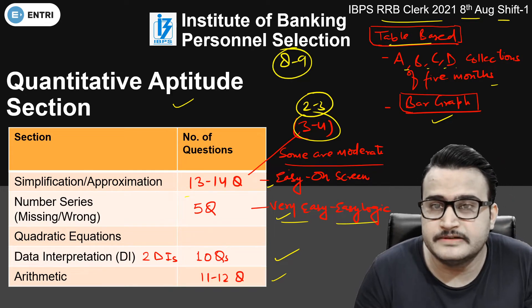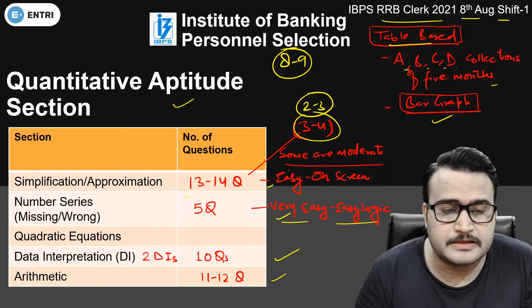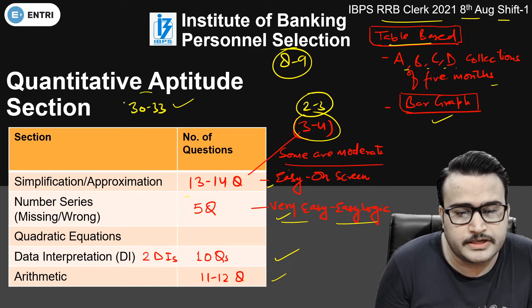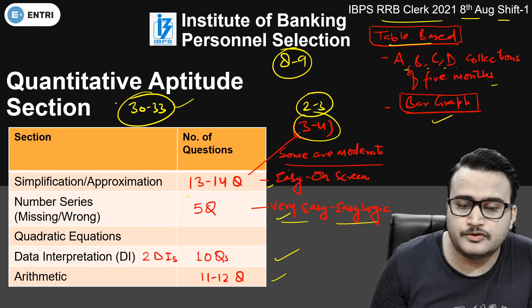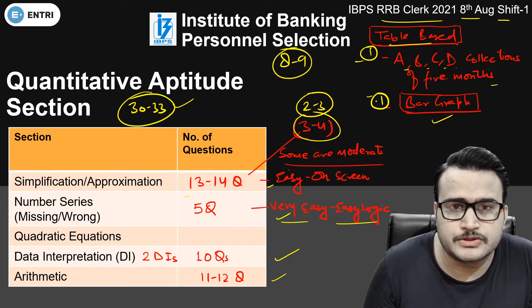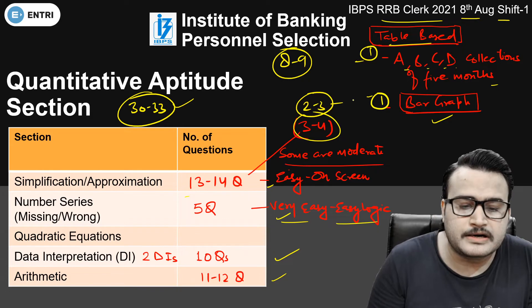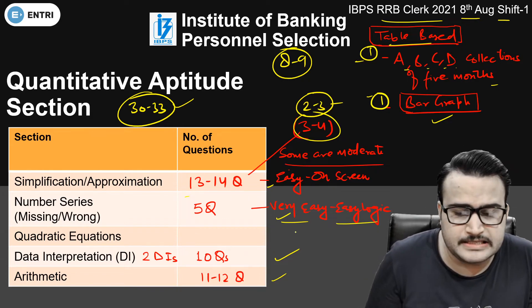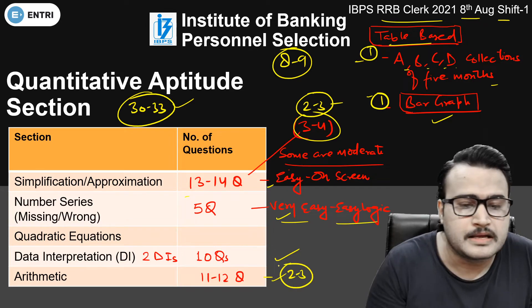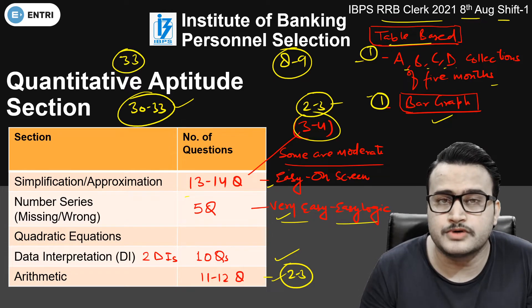Now, before moving to the Reasoning section — in the Quantitative Aptitude section, around 30 to 33 questions were easily attemptable. One question in table-based DI and one in bar graph DI took a bit more time for students. Similarly, 2 to 3 questions in simplification took a little time, and 2 to 3 questions in arithmetic also took some time. But overall, 33 is a very good, excellent attempt — this is what students are reporting.